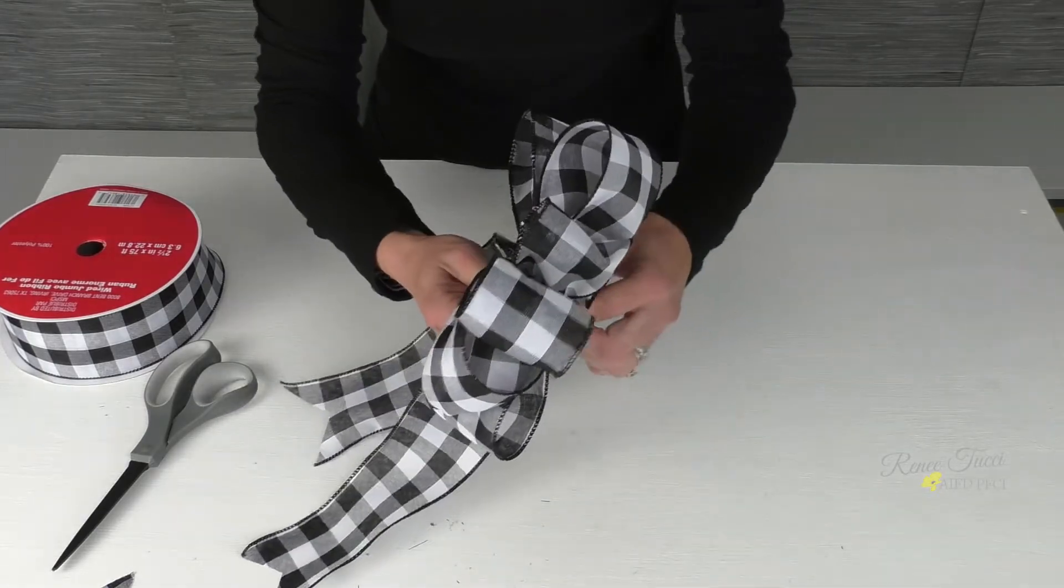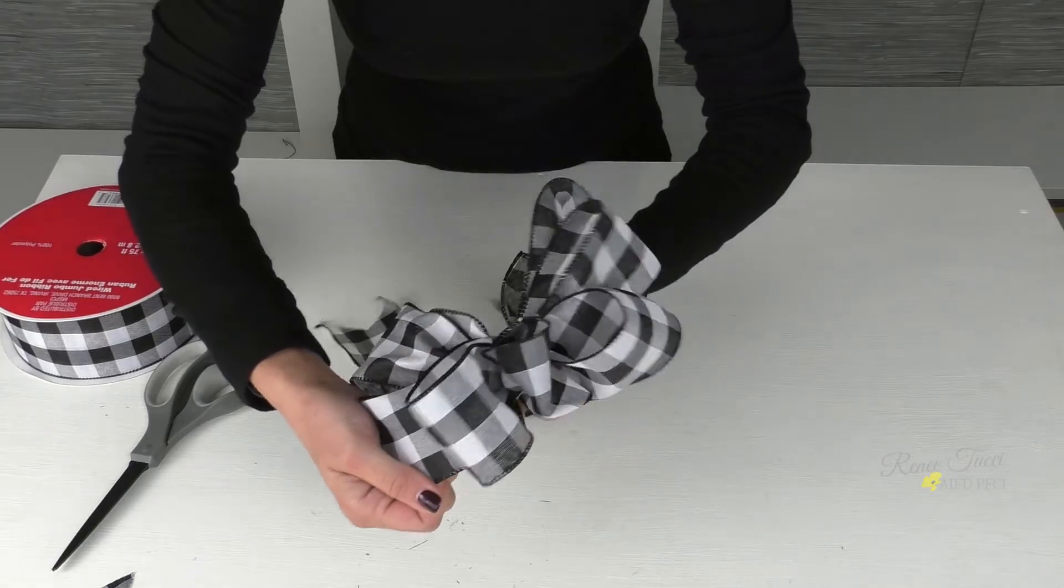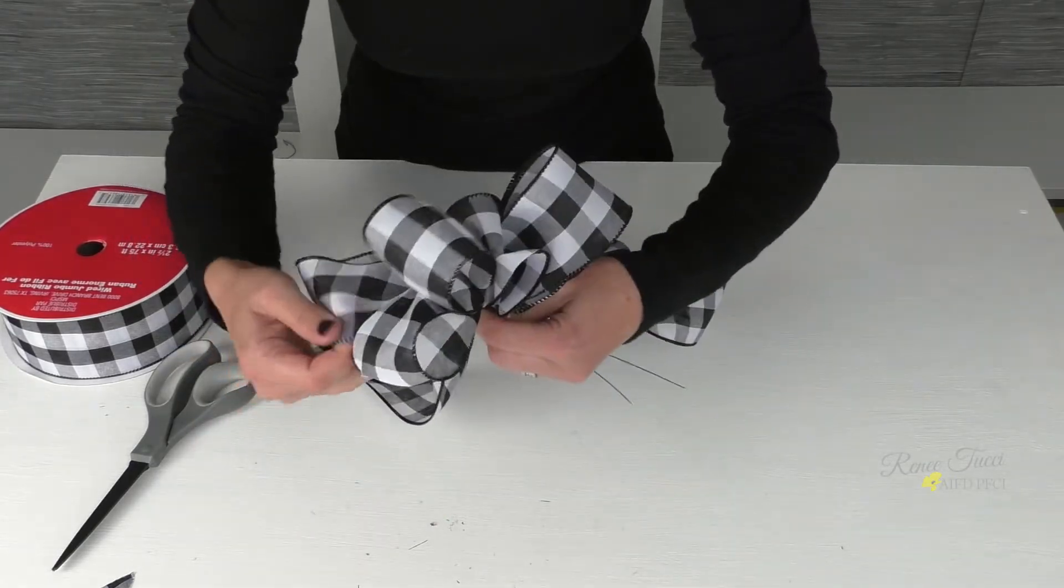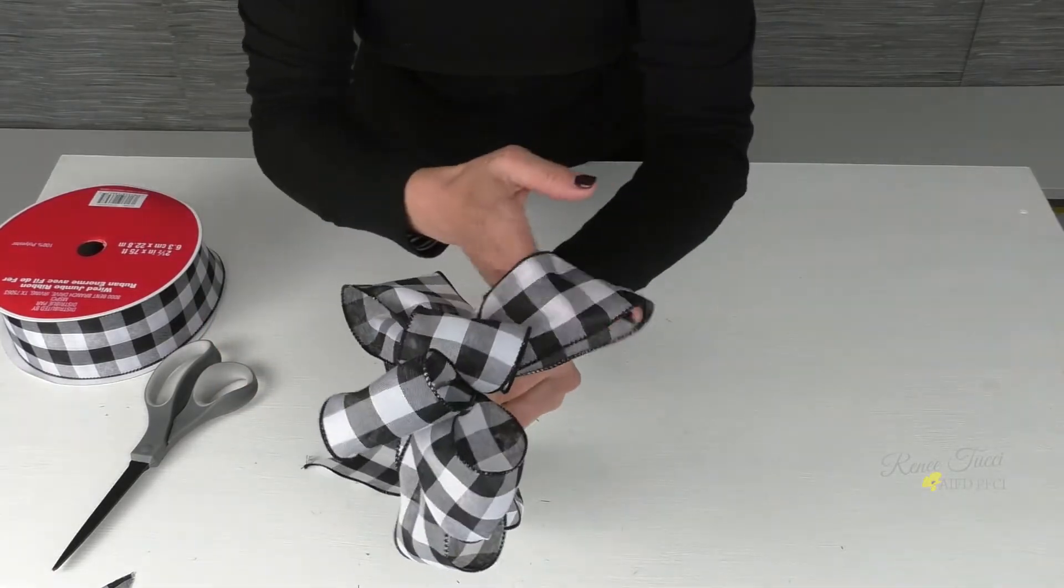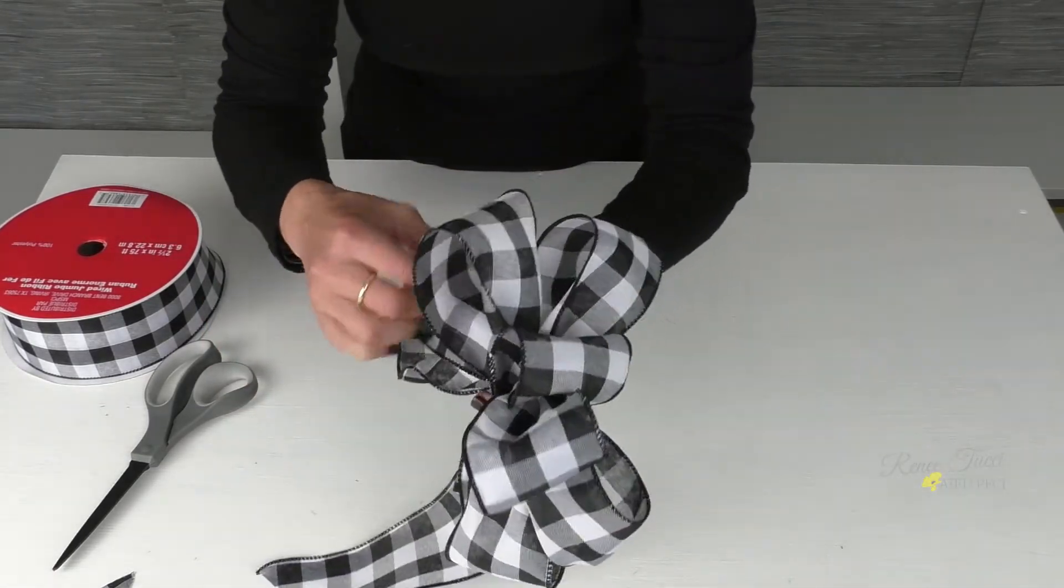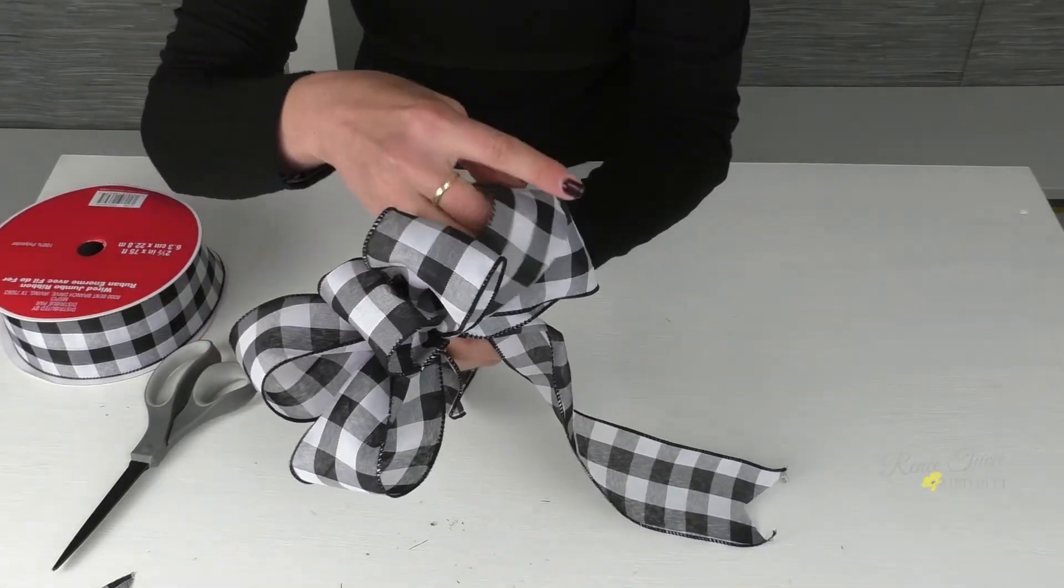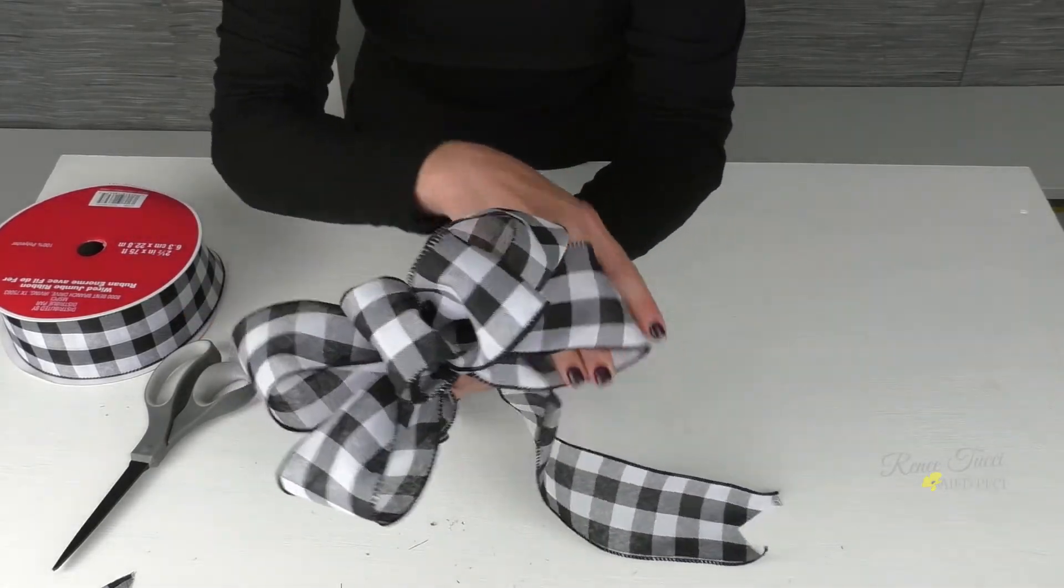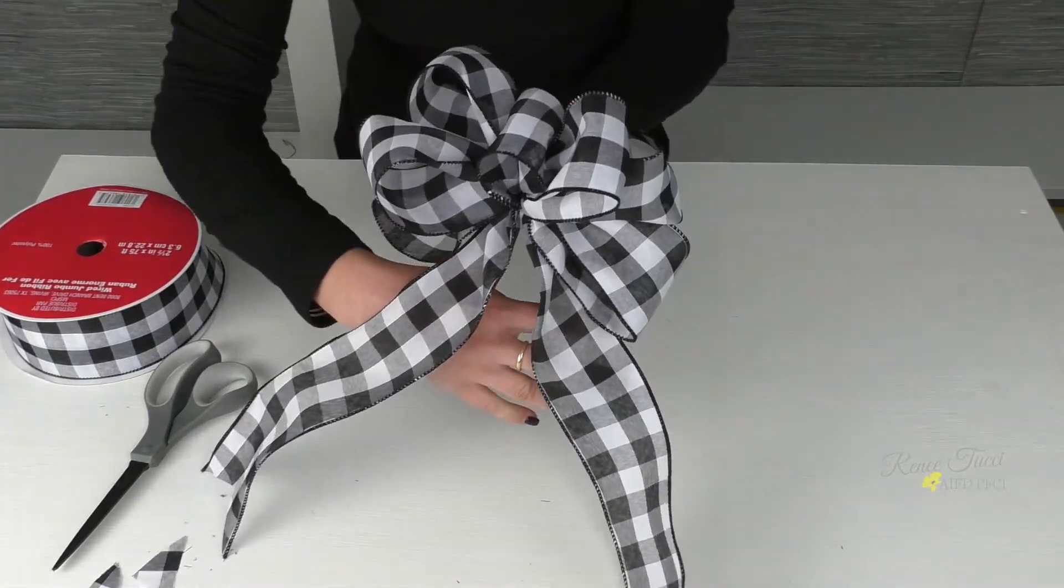And then we'll go back and fix our loops. And you can just yank them as you need to, to move them up and down, to fluff each loop and put the wire right in place where it's needed. And there you have our beautiful classic bow.